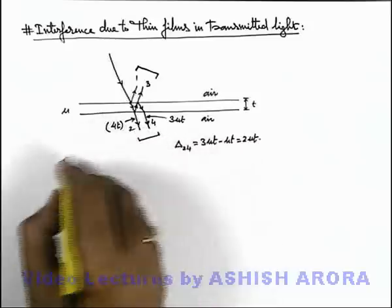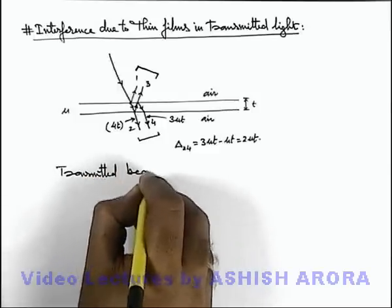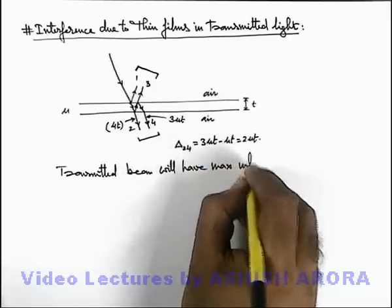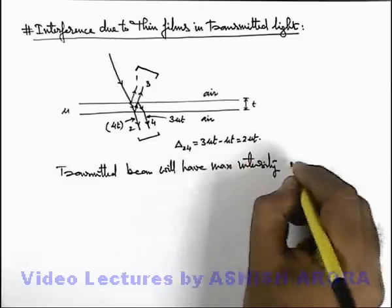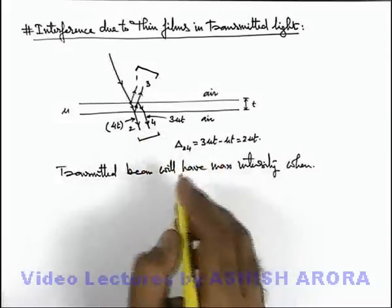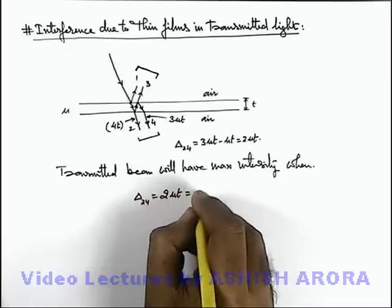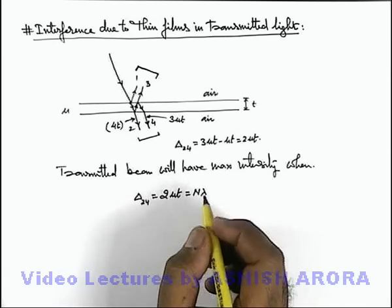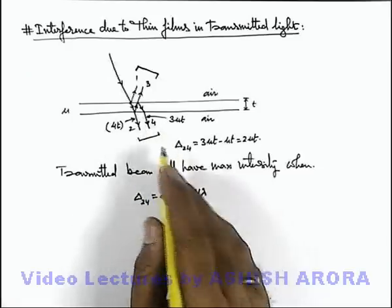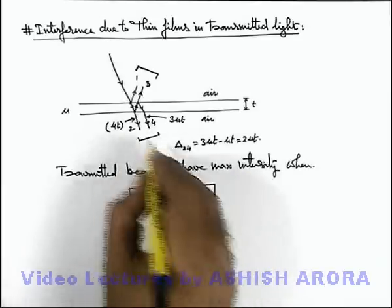So here we can say this transmitted beam will have maximum intensity when there will be a constructive interference between these two beams. So the path difference which is there in beams 2 and 4 is 2μt. When this is equal to nλ, as we know that when the path difference between the two waves is an integral multiple of λ, they interfere constructively and the intensity will be maximum. So this is the condition for maximum intensity in the transmitted beam.